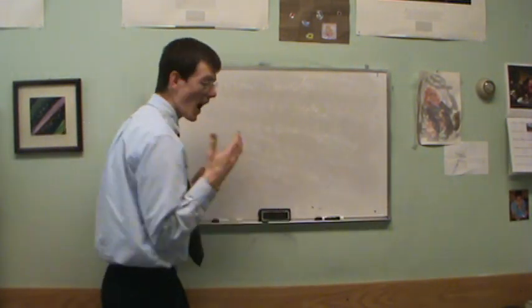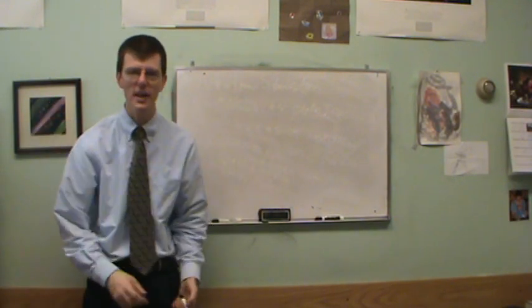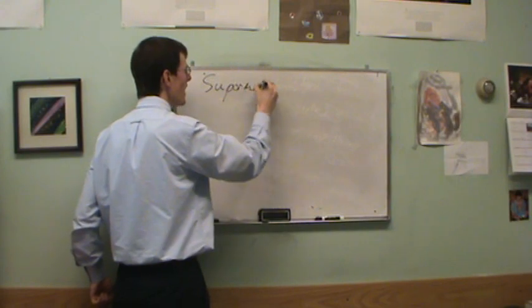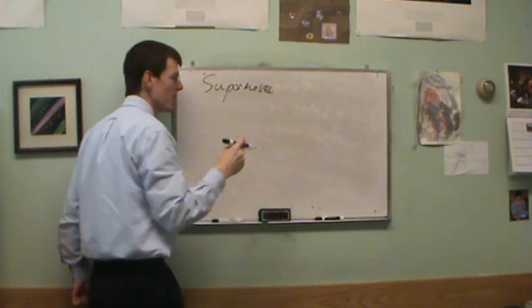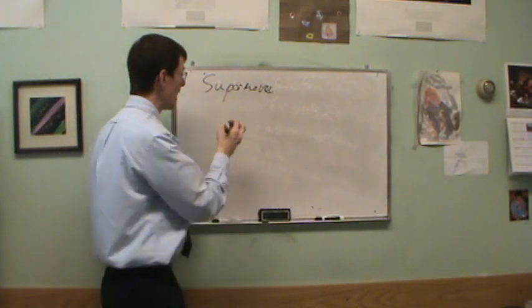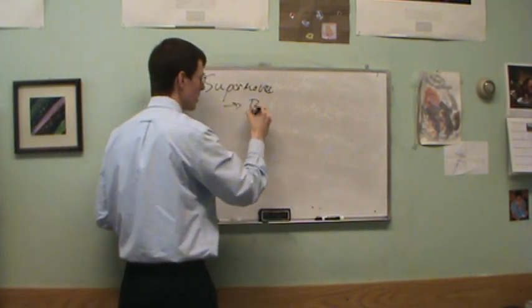There's one more thing that a star can turn into when it dies. High mass star, the biggest of the big stars, when they go supernova, the supernova can have so much pressure at the center that even the pressure of the neutrons can't stop it, and nothing can stop it. So it can turn into a black hole.